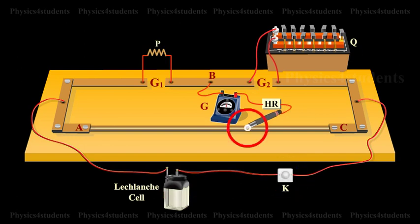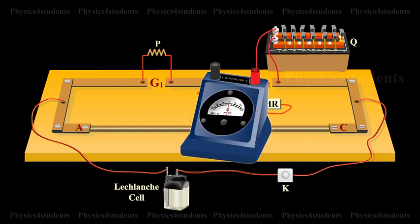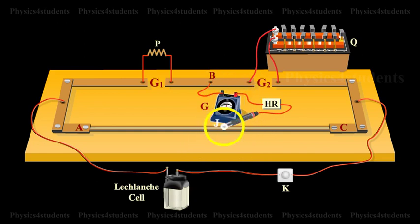Adjust the position of the metal jockey on the meter bridge wire so that the galvanometer shows zero deflection. Let the point be J. The portions AJ and JC of the wire now replace the resistances R and S of Wheatstone's bridge.